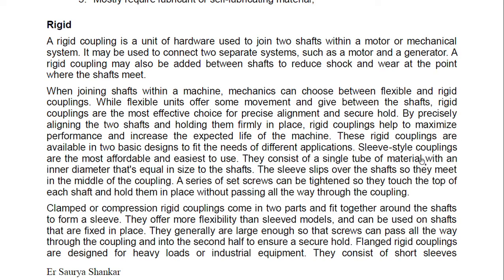Rigid couplings are available in two basic designs. Sleeve style couplings are the most affordable and easiest to use — they consist of a single tube of material with an inner diameter equal to the shaft size. The sleeve slips over the shaft so they meet in the middle, and set screws are tightened to hold them in place. Clamped or compression rigid couplings come in two parts and fit around the shaft to form a sleeve, offering more flexibility and usable on fixed shafts.